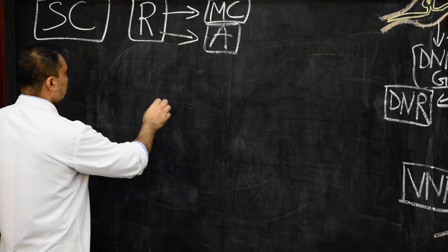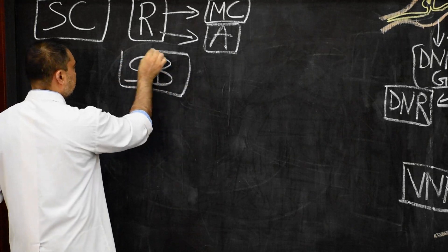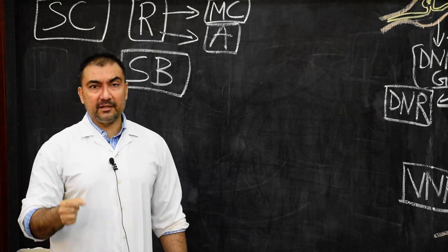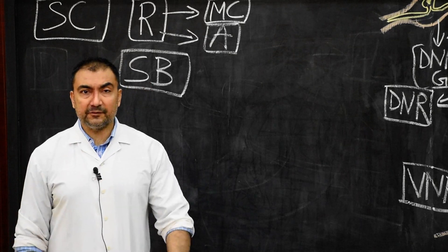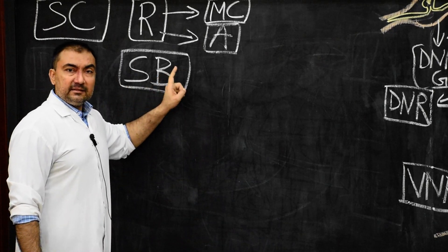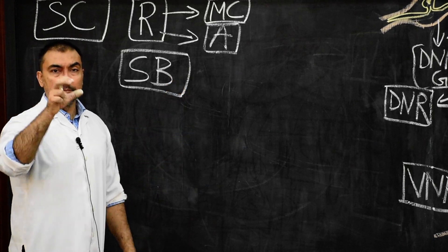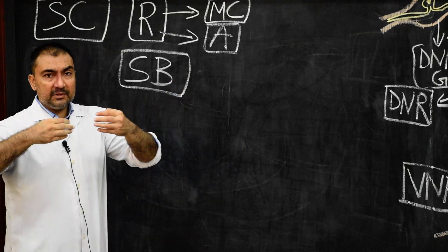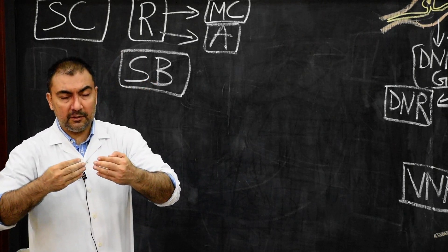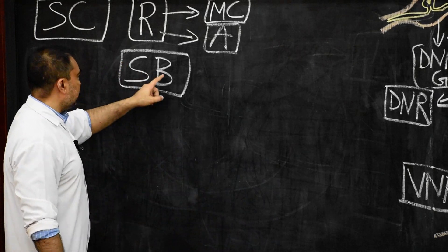Then we come to spina bifida, which I have discussed earlier. It is mandatory to mention it here in the developmental anomalies of the spinal cord. By definition, spina bifida is a developmental anomaly affecting the vertebral column, where the lamina will not close posteriorly, as a result of which the lamina of the vertebral column will remain open posteriorly, leading to spina bifida.